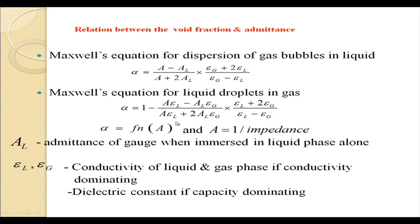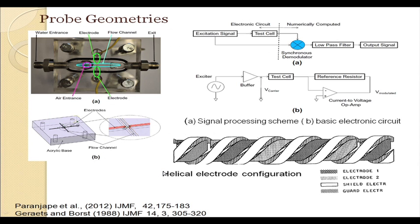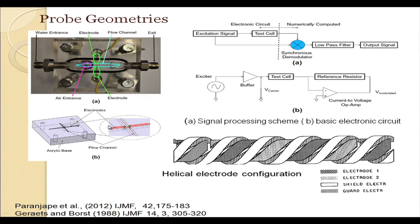For any other sort of distribution the mathematical derivation has not been done, and we know very well that none of these distributions are applicable for micro systems. Since nothing intrusive can be done, although a large number of probe designs are available for macro systems — namely grid electrode probes and point electrode probes — usually area-average arc or modified versions of arc electrode probes are used.